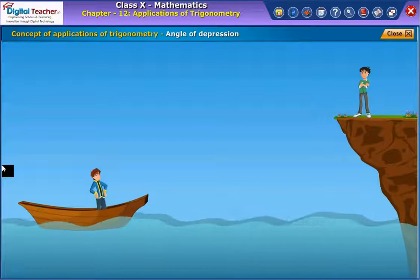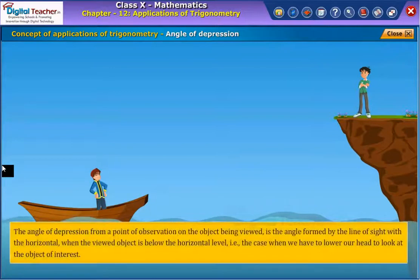Angle of depression. The angle of depression from a point of observation on the object being viewed is the angle formed by the line of sight with the horizontal when the viewed object is below the horizontal level. That is the case when we have to lower our head to look at the object of interest.